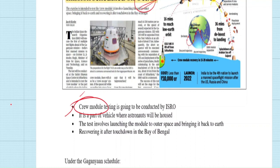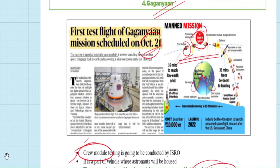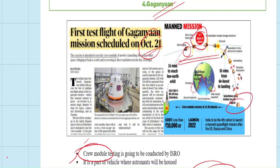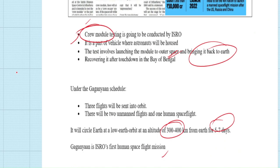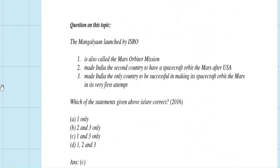The testing involves launching the crew module into outer space and then bringing it back to Earth — both aspects must be tested. Work on the crew module has been ongoing for two to three years. The crew module will land on the ocean on return. Under the Gaganyaan mission, there will be three flights — the first two will be unmanned and the last will be the actual human spaceflight. Previous year question on Mangalyaan (2016): Three statements were given. The correct answer — statements 1 and 3 are correct: it was called the Mars Orbiter Mission and India was the only country to successfully orbit Mars in its very first attempt.